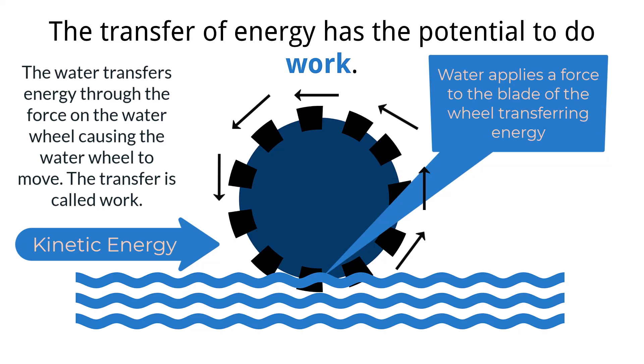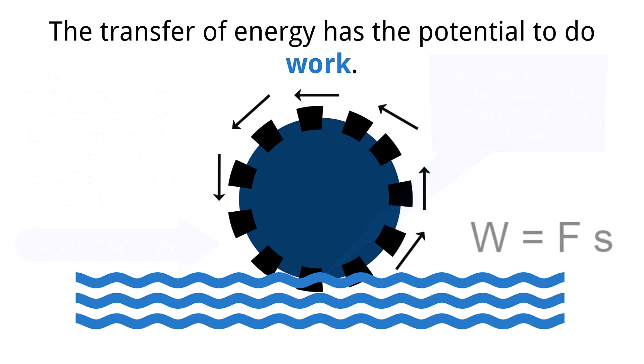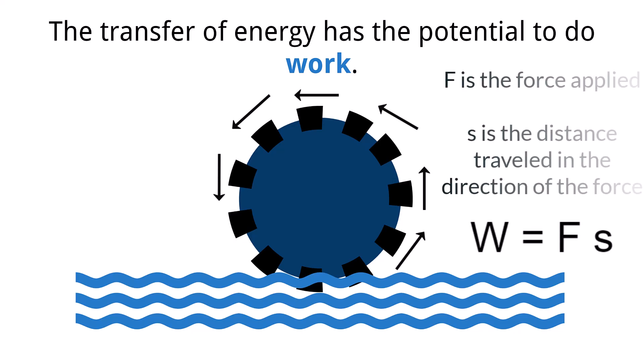The greater that amount of work done, which again would be the force from the water, the greater the amount of kinetic energy gained by the blade, and thus a faster moving waterwheel. The amount of work done can be calculated by multiplying the force applied, F, times the distance traveled in the direction of the force, S.